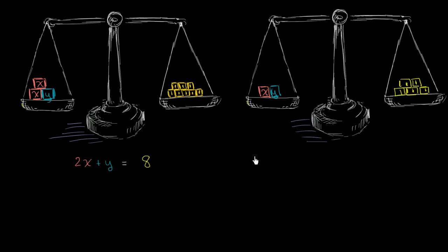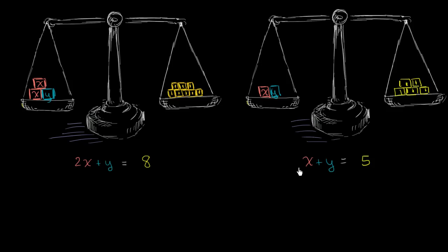The total mass on the left-hand side is x plus y, and on the right-hand side I have 5 kilograms. Since the scale is balanced, x + y = 5. But this information by itself still isn't enough — if y is 4, maybe x is 1; maybe x is 4 and y is 1. However, the interesting thing is we can use both pieces of information together to figure out what x and y actually are.